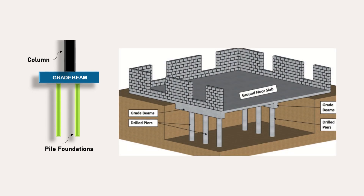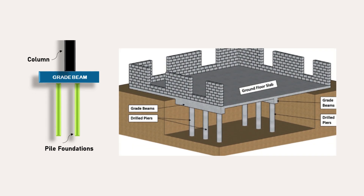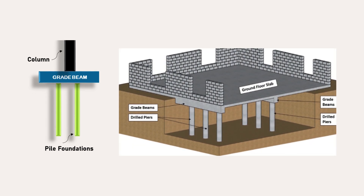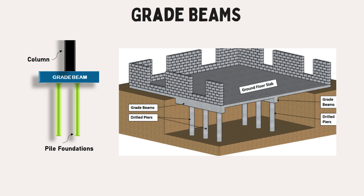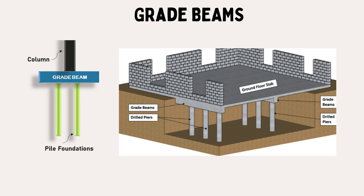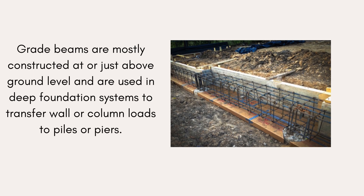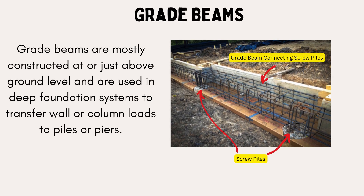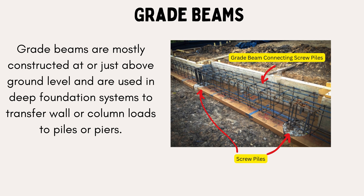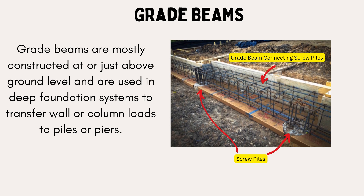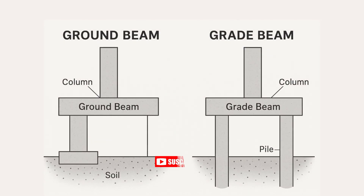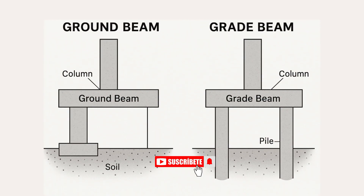If a beam is constructed to connect two pile foundations, usually friction piles, and it spans between them without continuous support from the soil, the beam is called a grade beam. Grade beams are mostly constructed at or just above ground level and are used in deep foundation systems to transfer wall or column loads to piles or piers. In many cases, grade beams and ground beams are used interchangeably on construction sites, although their functions and support conditions are different.